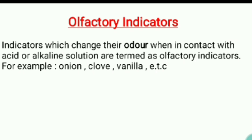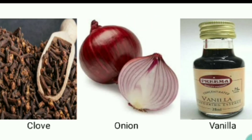The last and fourth type of indicator is the olfactory indicator. It works upon the change in odor — odor means smell. When it comes into contact with acids or bases, it will change the smell. Common examples of olfactory indicators are clove, onion, and vanilla — things we normally get in daily life. We can also check using these whether any substance we encounter is acid or base.